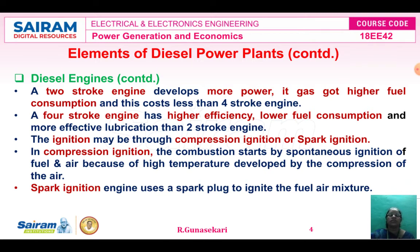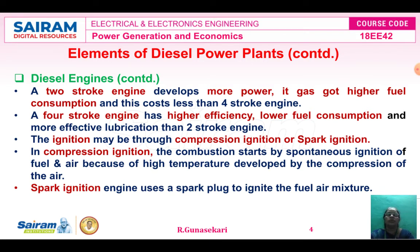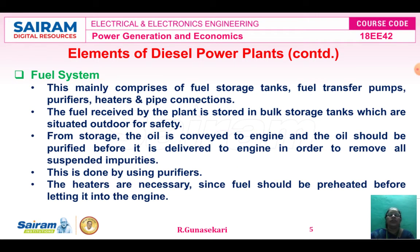The ignition process used in the diesel power plant may be through compression ignition or spark ignition. In compression ignition, combustion starts by spontaneous ignition of fuel and air because of the high temperature developed by compression of the air. In the spark ignition engine, a spark plug is used to ignite the fuel-air mixture. These are the details about the diesel engine, one of the elements of the diesel power plant.